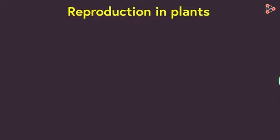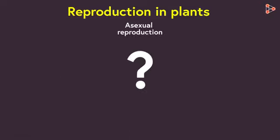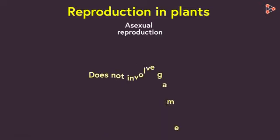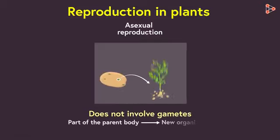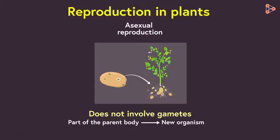Now can you guess what asexual reproduction will be? In contrast to the previous type, asexual reproduction does not involve gametes. It is a type in which some part of the parent body will be capable of growing into a new organism.